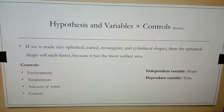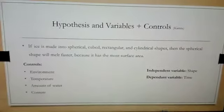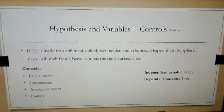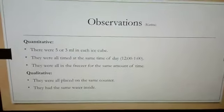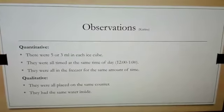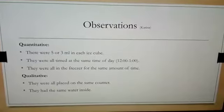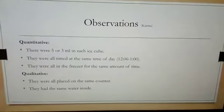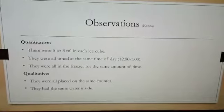Our controls are laid out there, and our independent variable is shape while the dependent variable is time. We had lots of observations during the experiment, such as taking measurements and being timed during the day, and all ice was placed on the same counter.